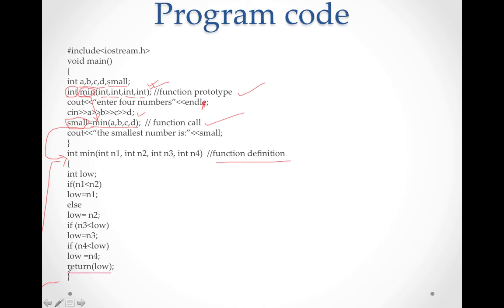This is the complete content where we find out the smallest value, and then 'return low' — return low means return the lowest value, the smallest number. It gives the value back to the calling function. The mean function result will be stored, and that value will be copied into small. The compiler follows the whole procedure, then the return keyword sends back the integer value since the return type is integer, and it is copied into small. Then cout prints the smallest number.